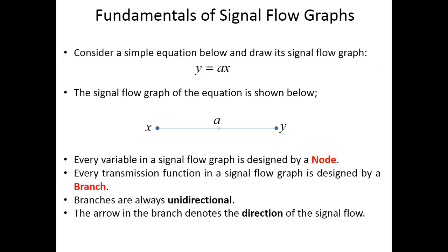The fundamental equation of a signal flow graph is y = ax, where x is your starting node, y is your end node, and a is the branch transmission. Every variable in a signal flow graph is represented by a node. Every transmission function in a signal flow graph is represented by a branch. Branches are always unidirectional — the arrow in the branch denotes the direction of the signal.